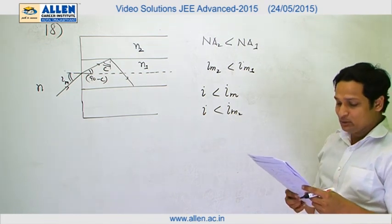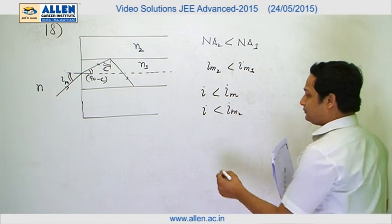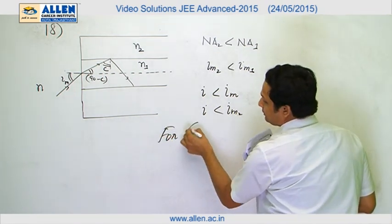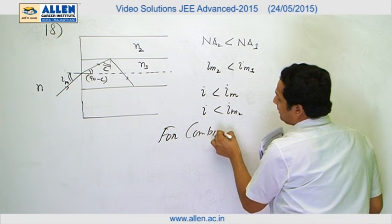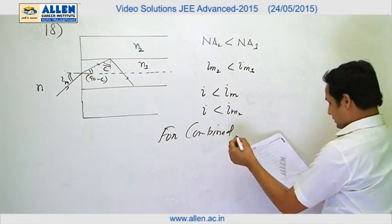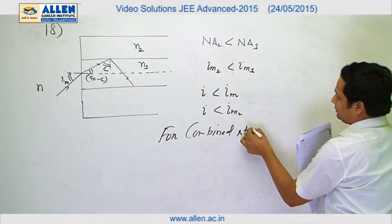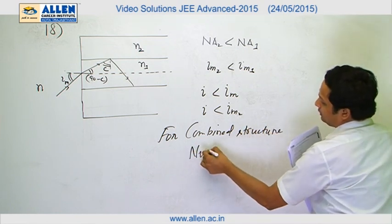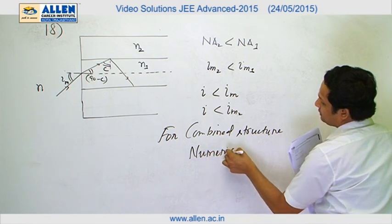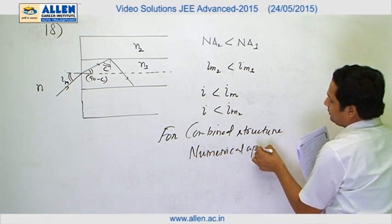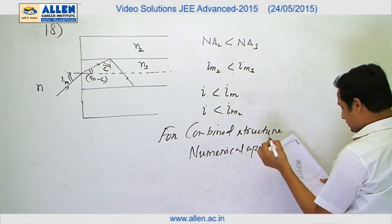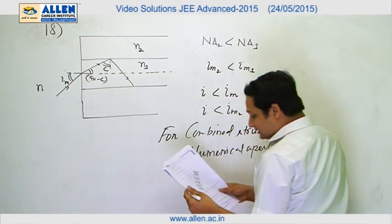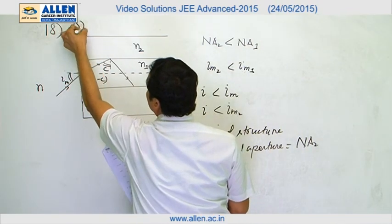For the combined structure, the numerical aperture will be NA2 because it is minimum. So the answer will be D.